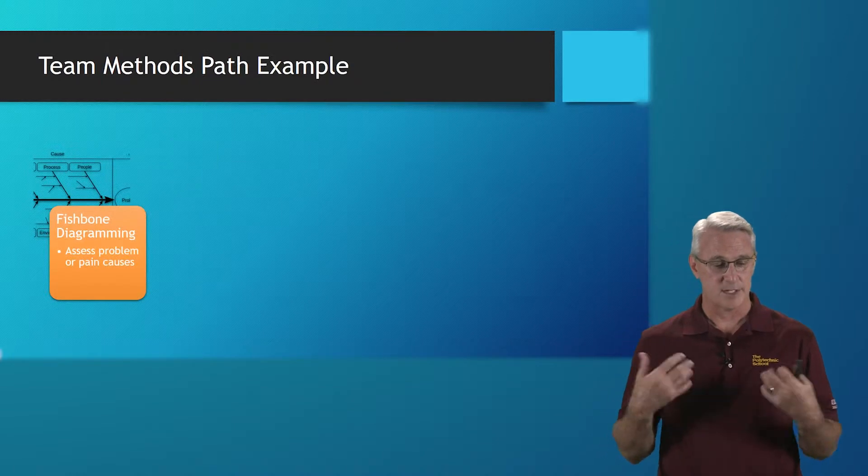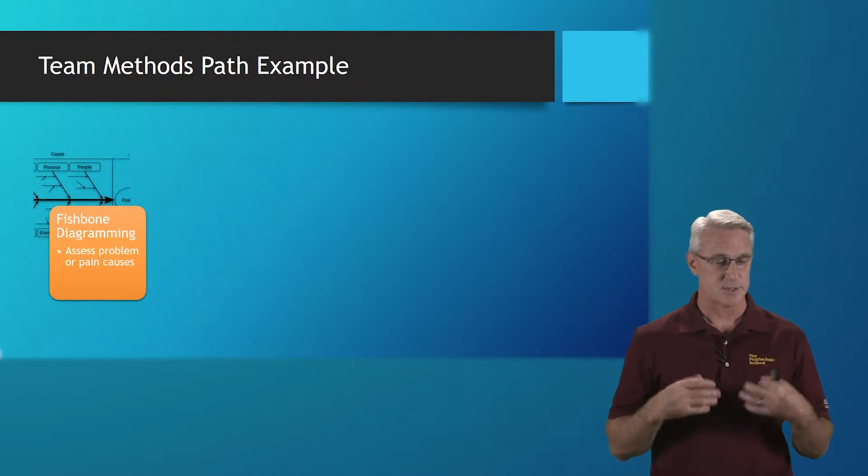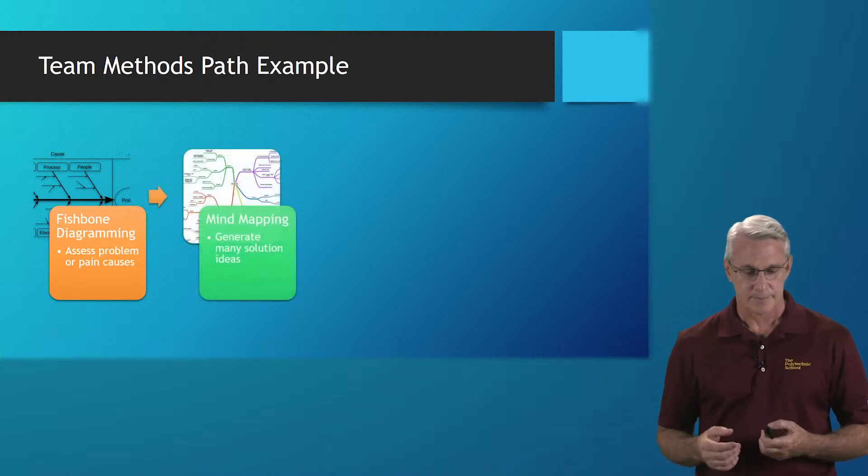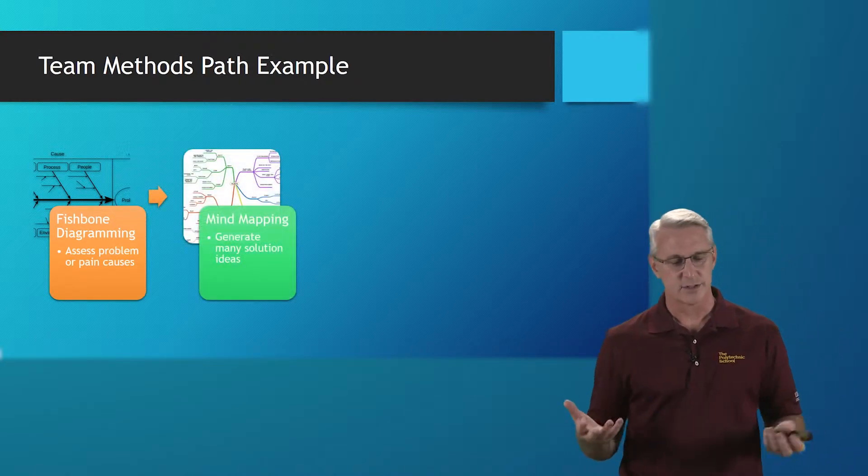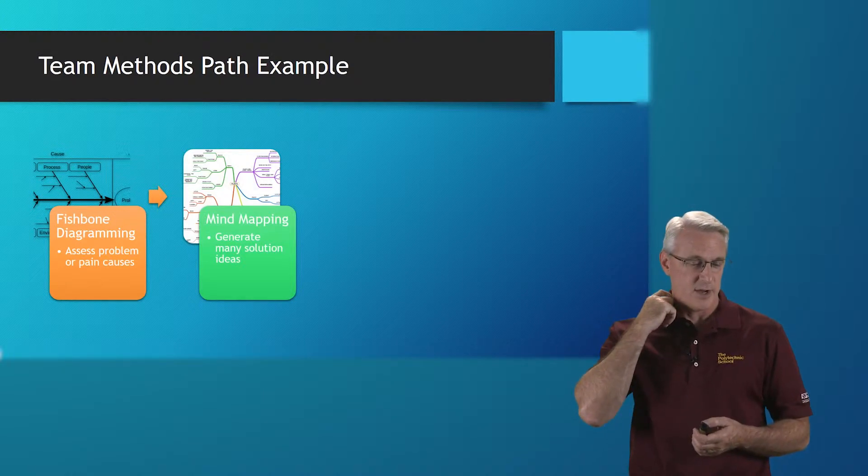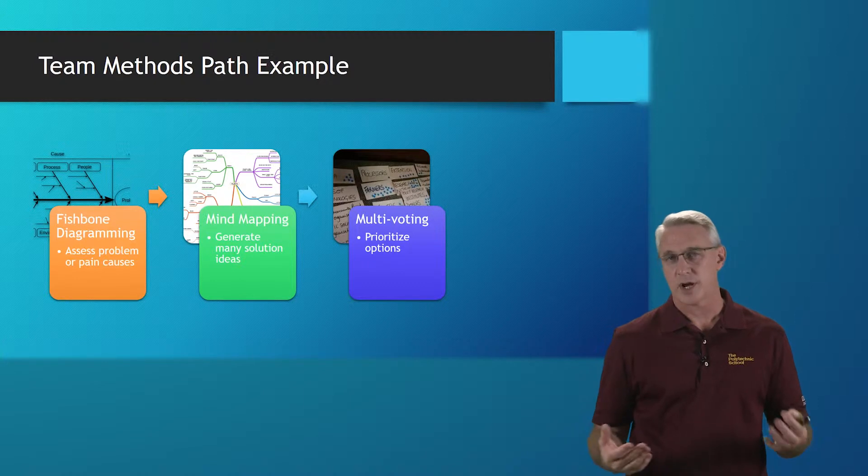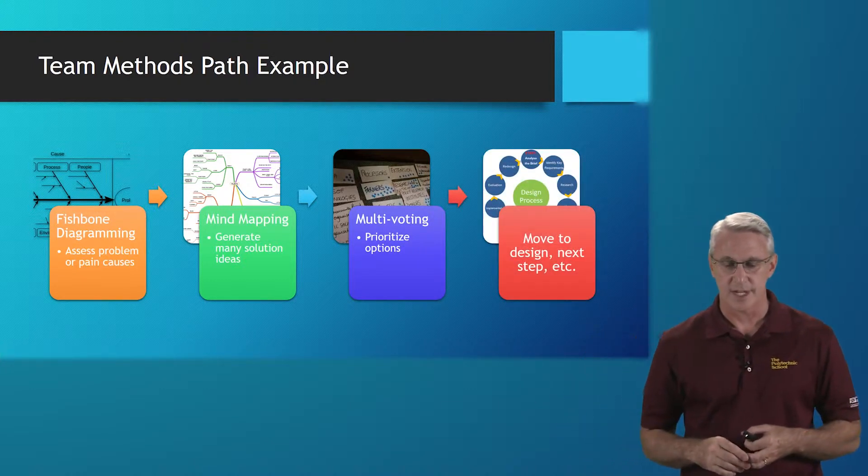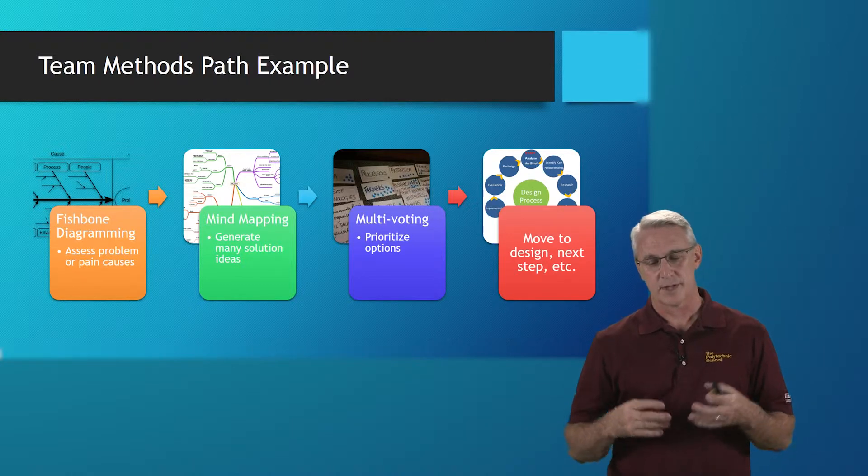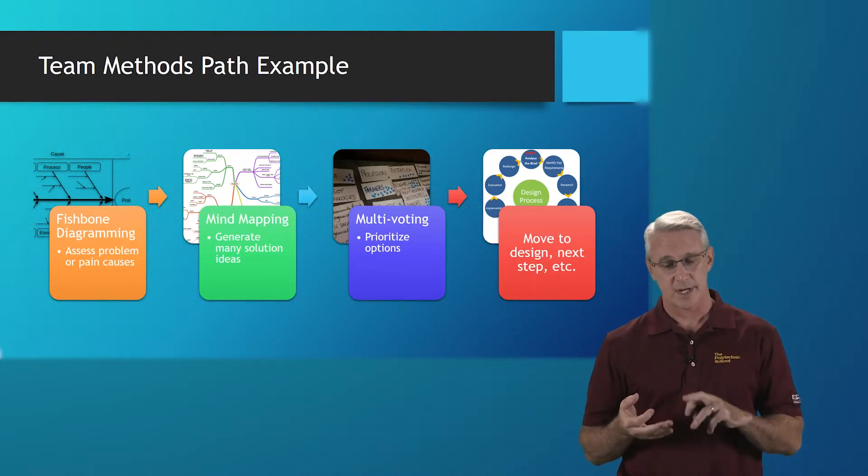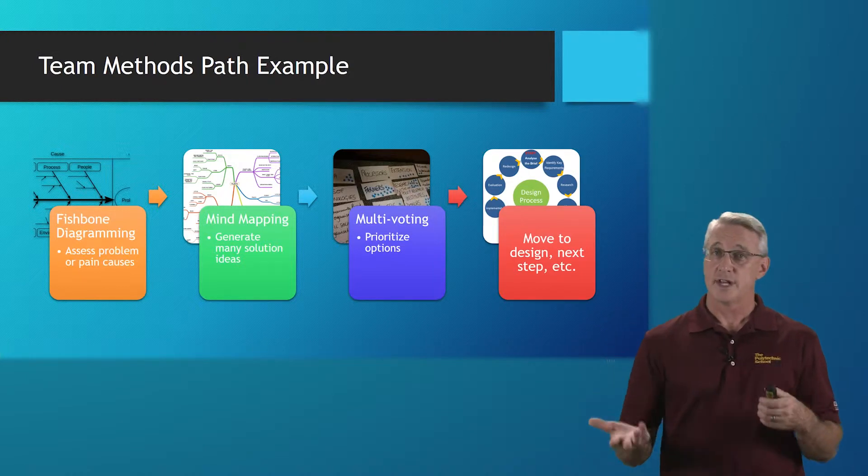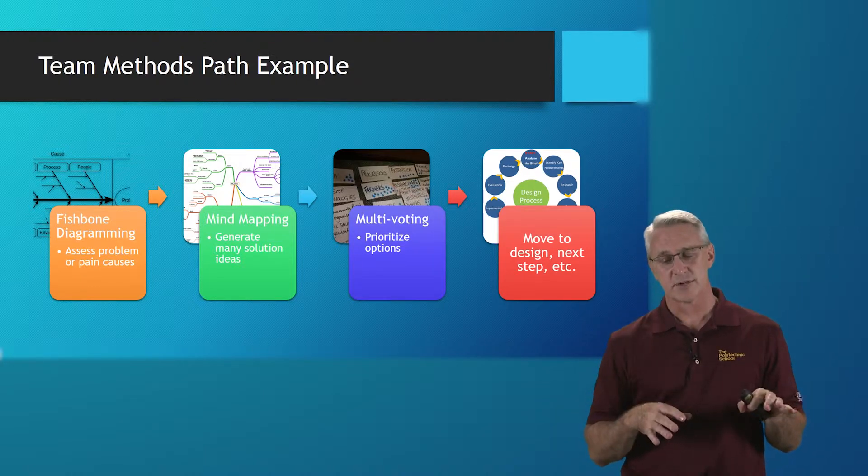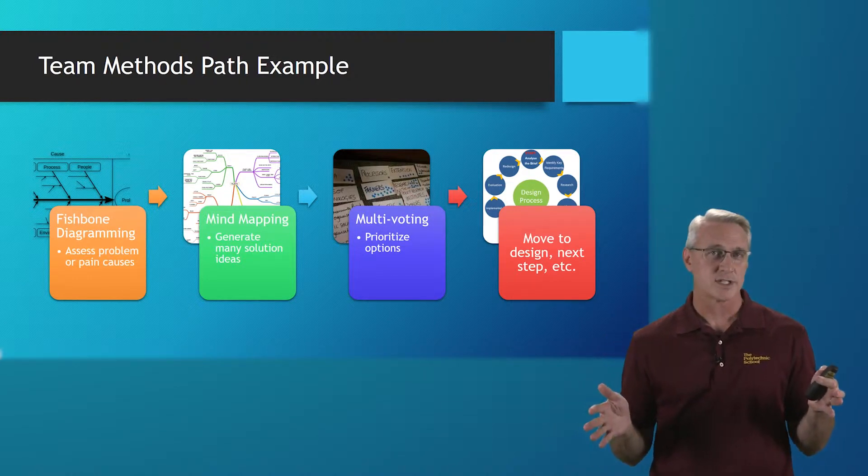Then the team comes together and we take some of those ideas and say, let's reassess some of these problems or pain causes. Are our assumptions correct? Now we're going to do something different: a fishbone diagram, different way. Mind mapping to generate many solutions or ideas, similar to a brainstorm but slightly different in how it's structured. Then multi-voting to prioritize options. Now we get everybody's input as to who thinks which ideas are best. Then we move on to design or whatever the next step is. We've got something where we think we've got a solution we want to move in and spend resources, people, time, money, materials onto the next step. Those are different ideas of how these tools can be used in a process.